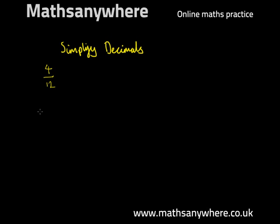One way of checking whether we can simplify this is write out the factors of both the numerator, the number at the top, and the denominator, the number at the bottom. So factors are numbers that go into the number in question.